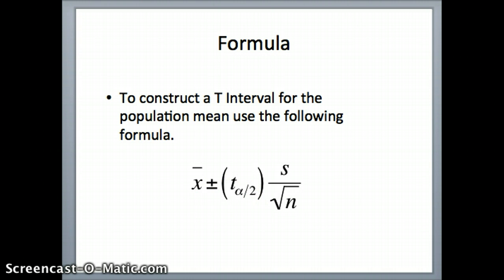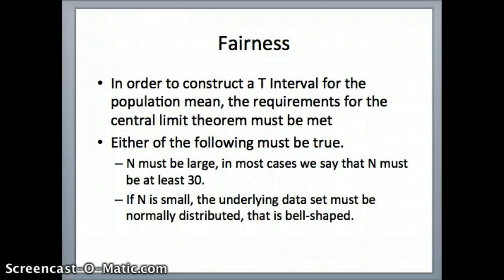Now this isn't always fair. This process will sometimes lead to difficulties. So let's make sure we understand when it is reasonable to use this formula. Either, n must be large. So we have to have at least 30 items in our data set. If that's the case, it is usually fair to use this model. If n is small, then we have to say that the underlying data set is normally distributed or bell-shaped. If we have a bell-shaped distribution, it is fair for us to use this approach with a small n, with n of less than 30.